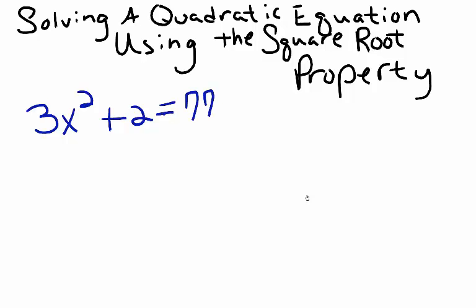This is a quadratic equation, and therefore it has up to two possible solutions. We'll solve using the square root property by first isolating x squared on one side.